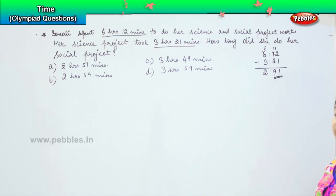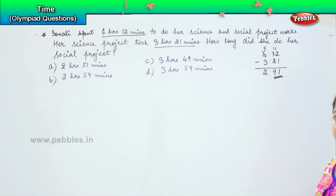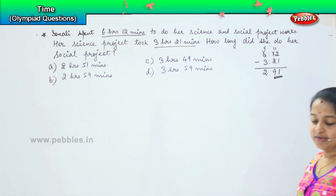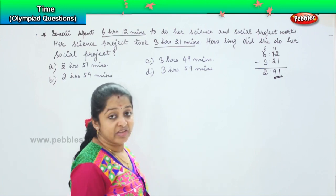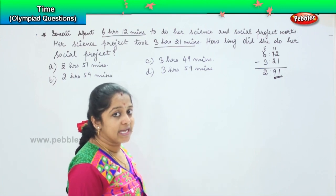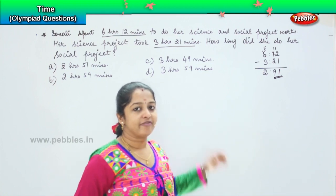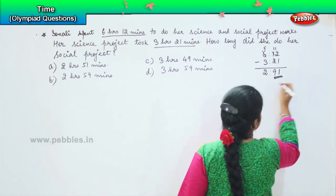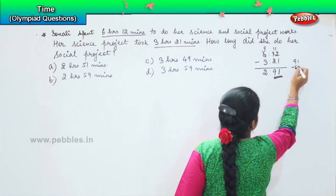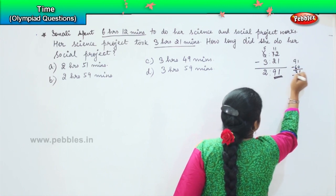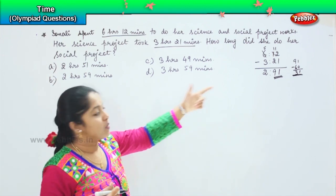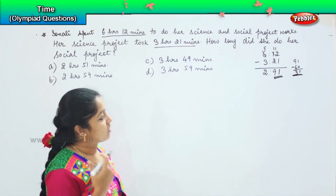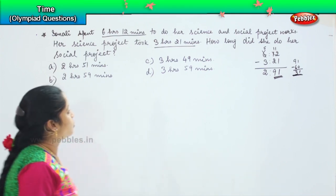So that gives us two hours and ninety-one minutes. But is it possible to write two hours and ninety-one minutes? No, because one hour has sixty minutes. So ninety-one minus sixty is thirty-one minutes. We need to add that extra hour, which means she has taken three hours and thirty-one minutes.